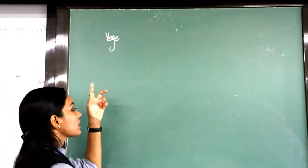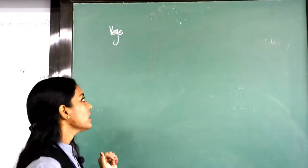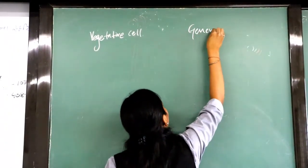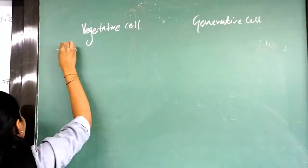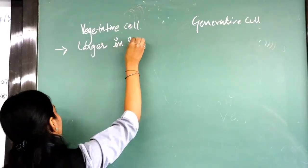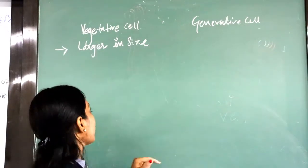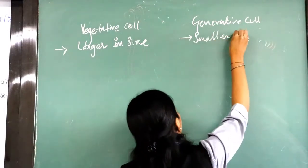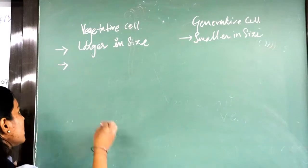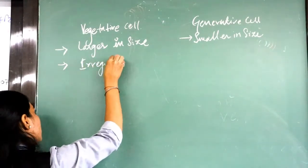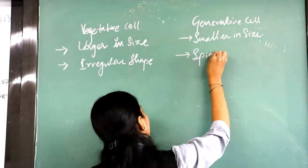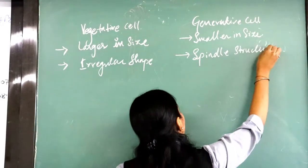Now we will study this comparatively — vegetative cells as well as generative cells. Vegetative cells of a pollen grain are said to be larger in size. Vegetative cells are seen to be irregular in shape. Whereas generative cells are spindle-shaped in structure.